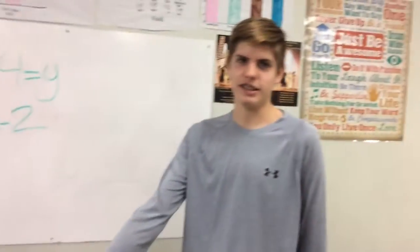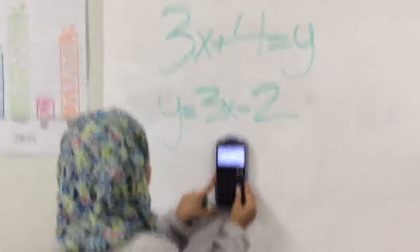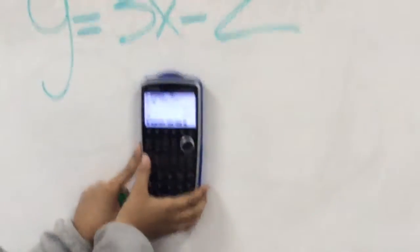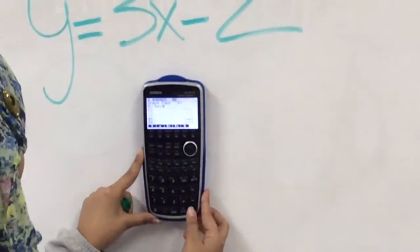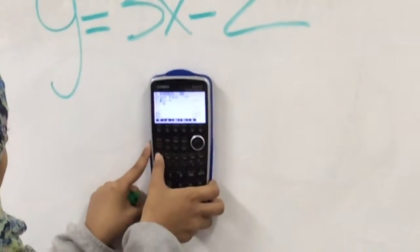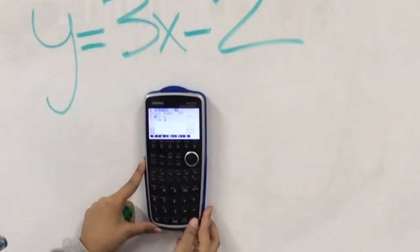Right now Nimra is plugging it into the calculator. The first one is called y2. Now she's entering the second one, 3x minus 2.